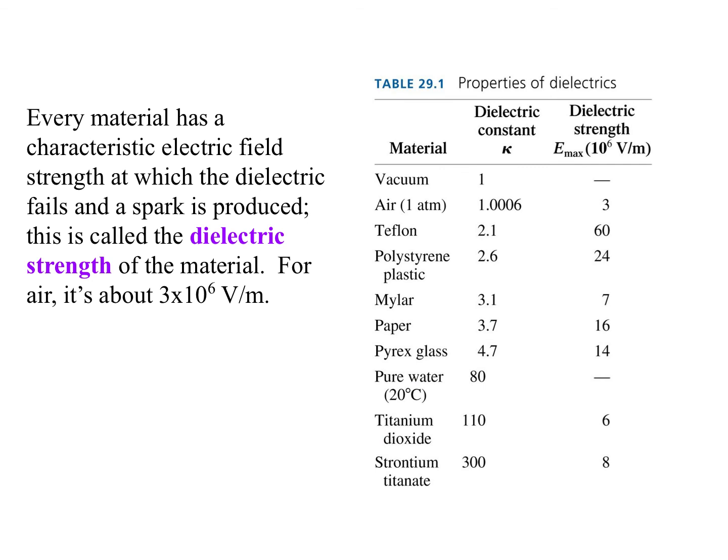Every physical material has a characteristic electric field strength at which the dielectric fails and a spark is produced. We call this the dielectric strength of the material. For air, it's about three times ten to the sixth volts per meter. About three million volts per meter, you will pull apart all the insulator dielectric, the polarized atoms, and you'll have actual current flow. It will stop being insulator, become a conductor at least briefly, and those charges will try and meet up. This is where lightning strikes and such come from.